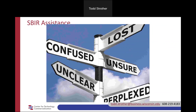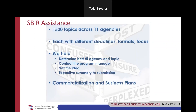Our clients primarily come to us for SBIR assistance. With about 1,500 topics across 11 agencies — each with their own goals, formats, and deadlines — it can get confusing. Our goal is to help clients determine the best agency and topic, help them get in touch with program officers, vet their idea, and provide guidance to make a stronger proposal. We have templates for many documents and extensive experience improving submissions. We also help with commercialization plans, which are required for Phase 2.